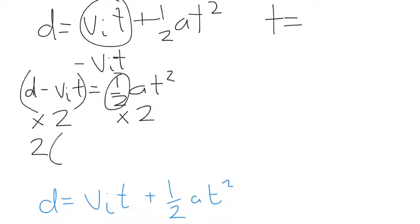So we've got 2 times d minus vᵢt equals at squared. So now we've still got a coefficient out the front this time, which is the a. To get rid of that, we're going to divide by a. And if we do that to one side, we have to do it to the other. So we're going to cancel out our a's, and we're left with t squared equals 2 times d minus vᵢt over a.